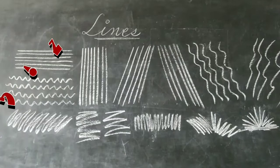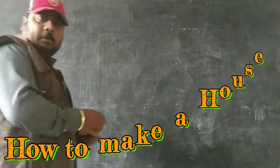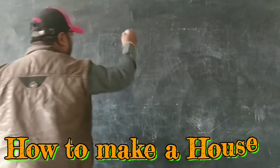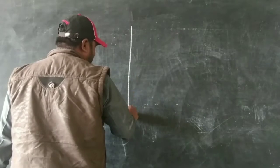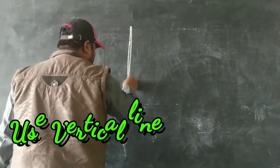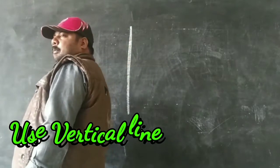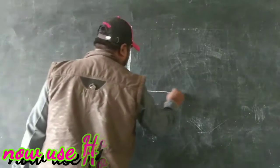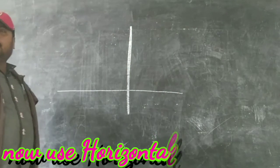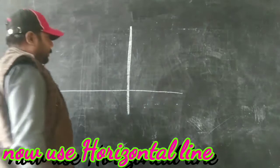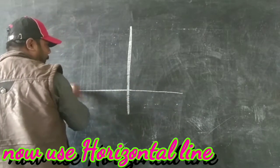So we have learned how to make lines. Now I am going to show you how to make a house using lines. This is what line? This is a vertical line. What is it? Vertical line. And then this one is a straight line, or horizontal line. Right?